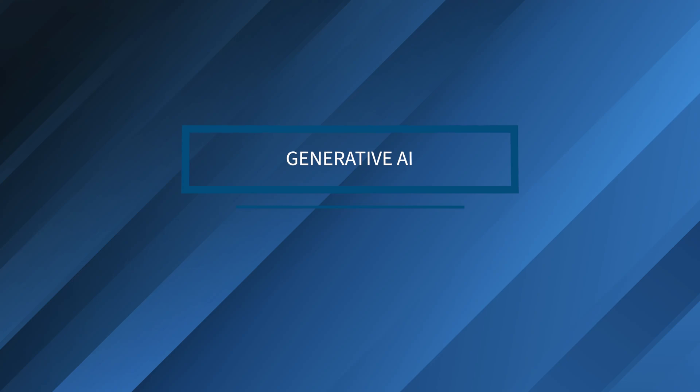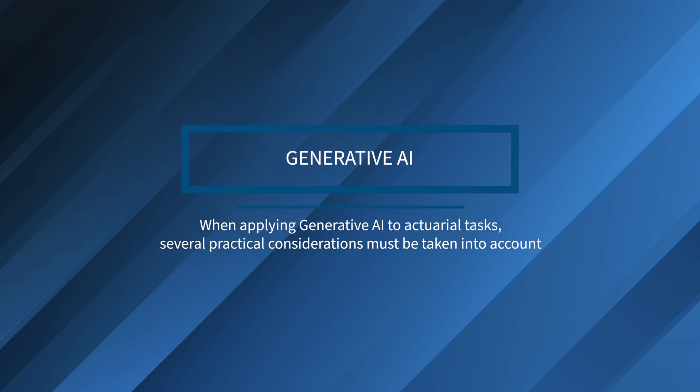When applying Gen AI to actuarial tasks, several practical considerations must be taken into account. Actuaries need to be aware of limitations and areas of concern such as quality and accuracy, data privacy, auditability, intellectual property ownership issues, and ethical and moral considerations. Ensuring the accuracy and reliability of AI-generated content is crucial, as is protecting sensitive data and maintaining transparent processes.